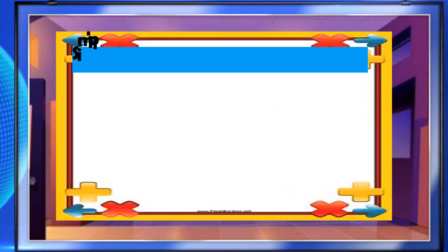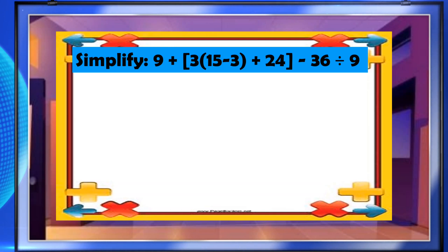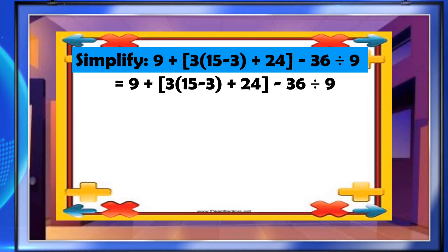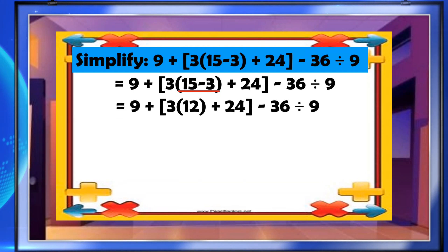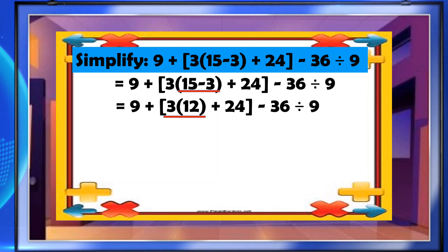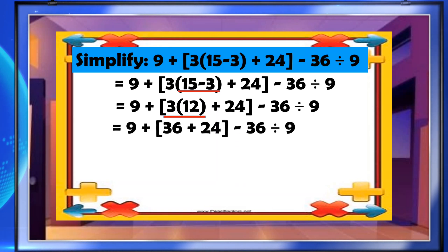Another example: simplify 9 plus 3 times (15 minus 3 plus 24) minus 36 divided by 9. First, 15 minus 3 is the innermost inside the groupings, so this is the first thing we should do. 15 minus 3 gives us 12. Now we have 9 plus 3 times (12 plus 24) minus 36 divided by 9. Next, we have to multiply 3 and 12, because 12 is still in the parentheses. So 3 times 12 equals 36. Now we have 9 plus 36 plus 24 minus 36 divided by 9.